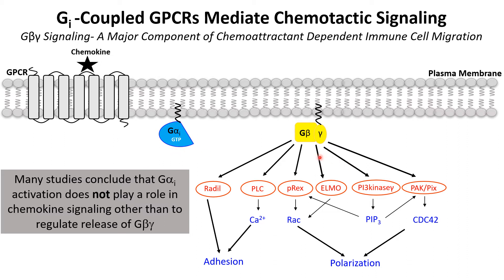This activated G-beta-gamma can activate multiple effectors which can regulate cell adhesion, polarization, and migration. But many studies conclude that G-alpha-I doesn't play a role in chemokine signaling other than to regulate release of G-beta-gamma, which really isn't the case.